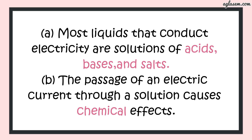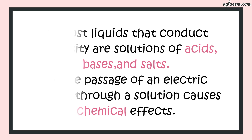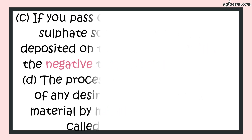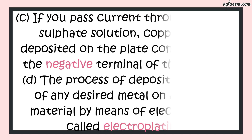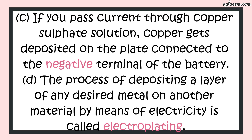Second part is: the passage of an electric current through a solution causes dash effects. Answer is: chemical effects. Third, if you pass current through copper sulphate solution, copper gets deposited on the plate connected to a dash terminal of the battery. Answer is: negative terminal.